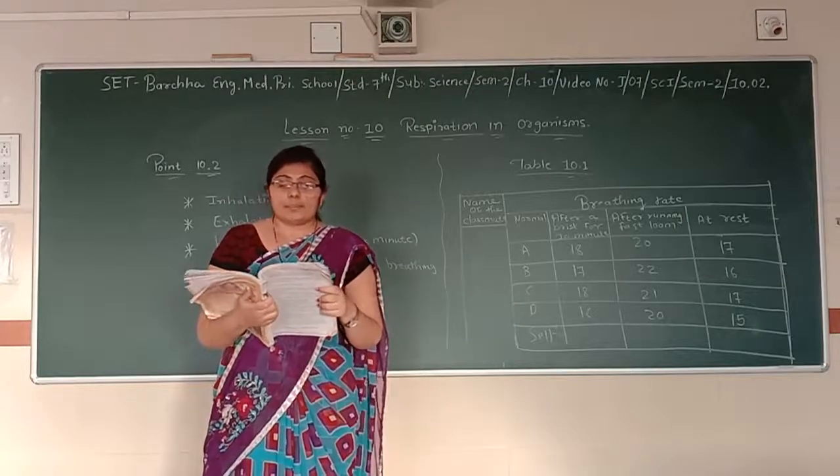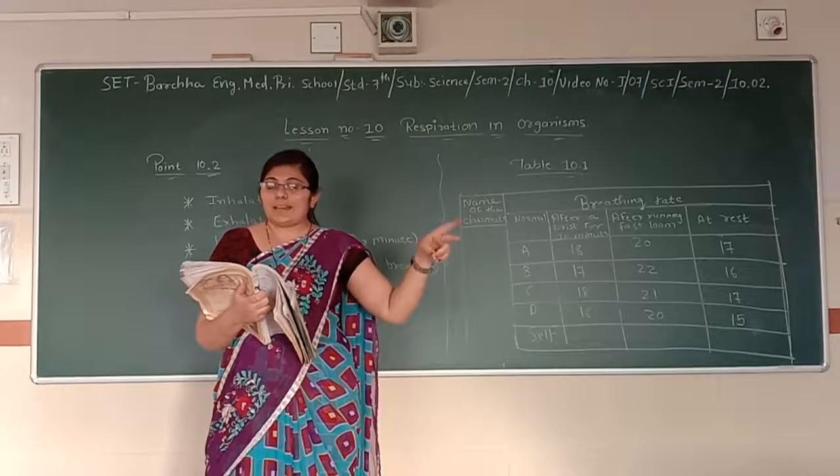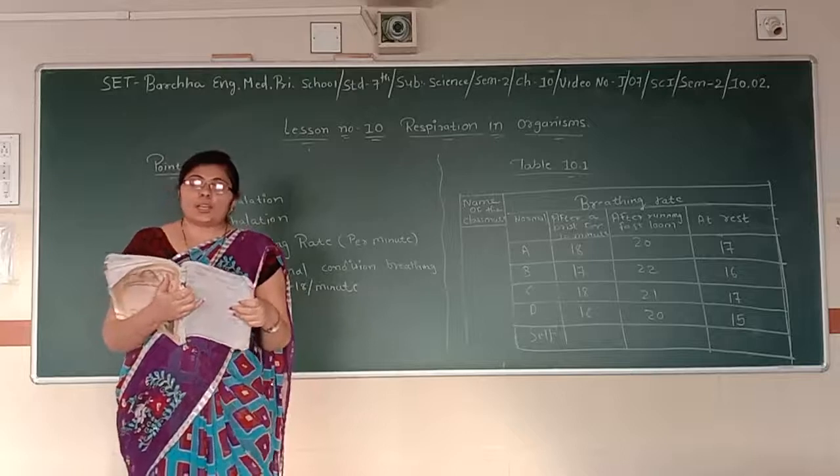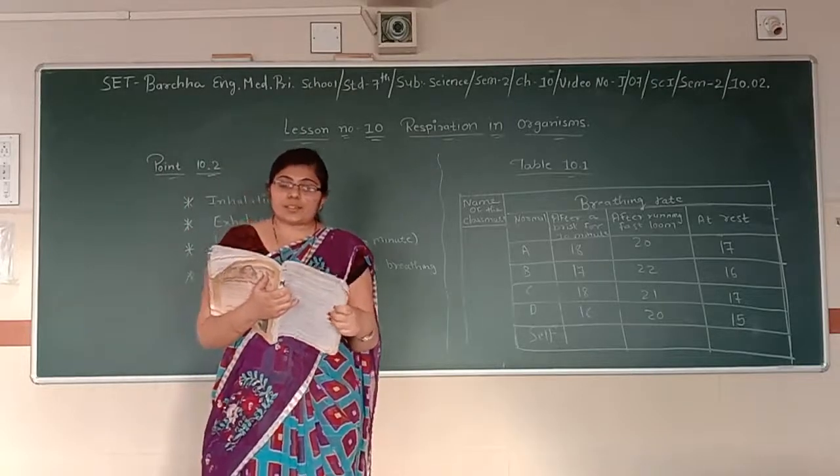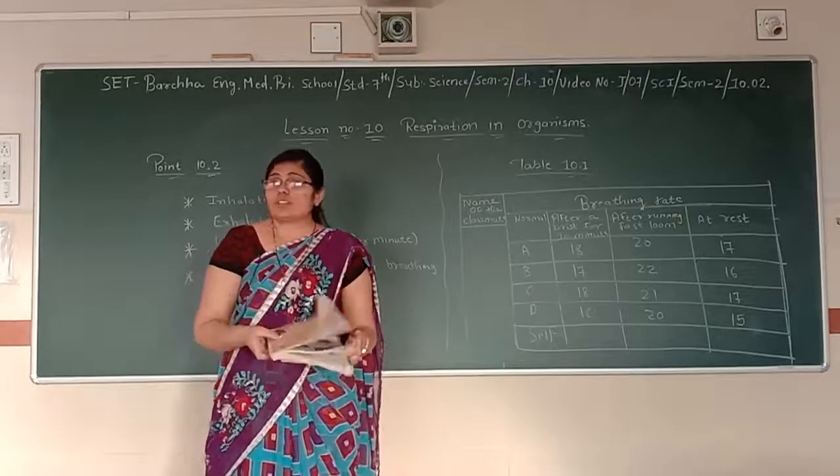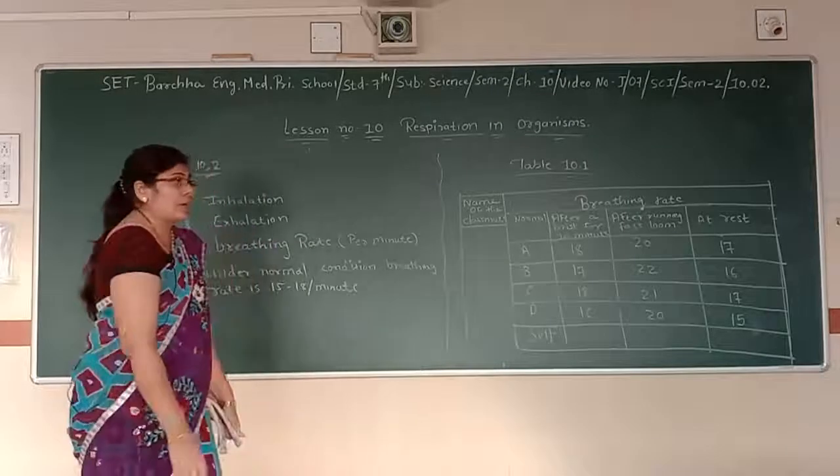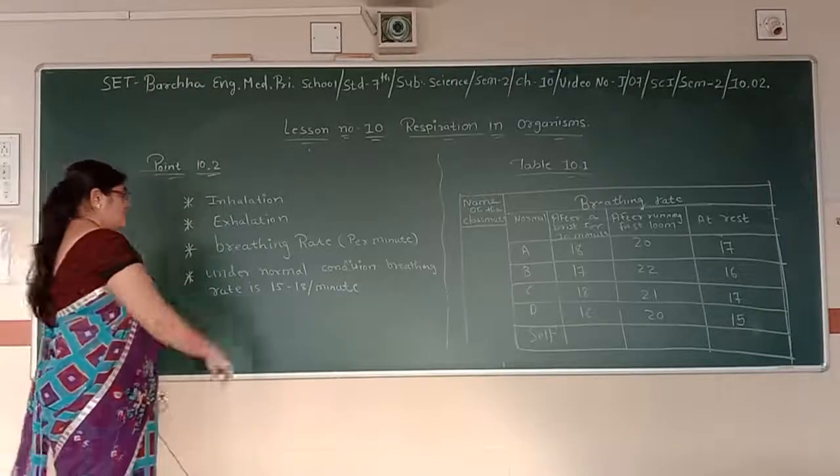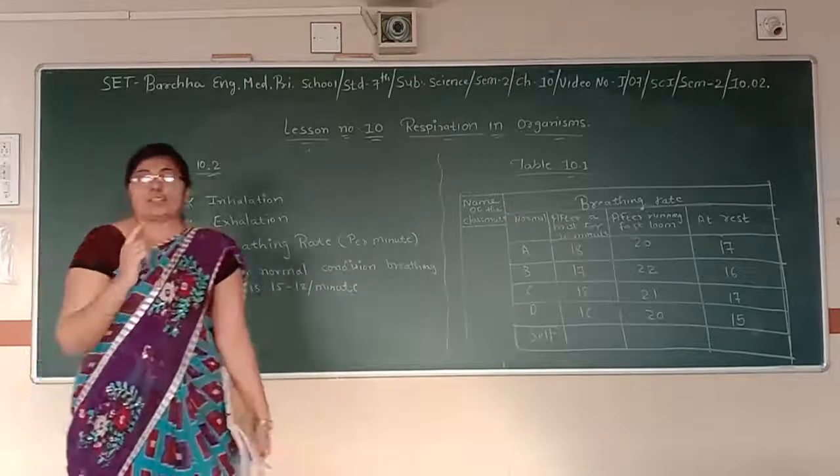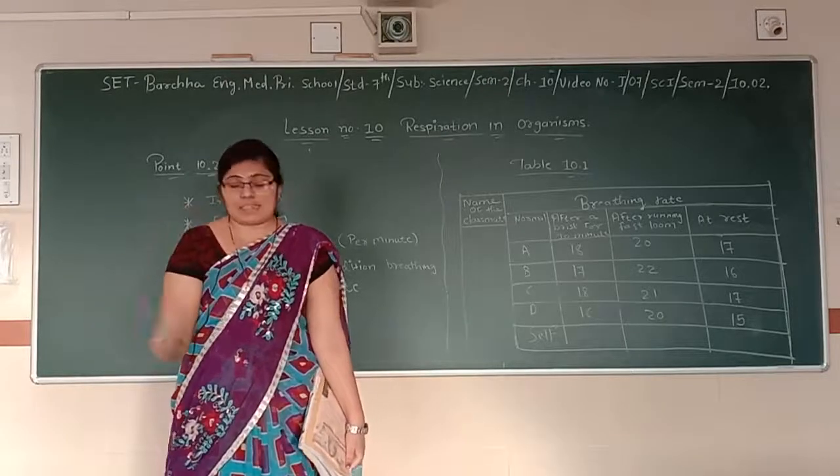One breath means one inhalation plus one exhalation. Breathe means what? It is a combination. Combination of inhalation and exhalation. Would you like to find out your breathing rate? Do you want to know whether it is consistent or it changes according to the requirement of oxygen by the body? Before you start counting your breathing rate, let me tell you that under a normal condition, breathing rate is 15 to 18 per minute. In one minute, you can perform 15 times inhalation and exhalation combination. Minimum 15, maximum 18, normal rate.